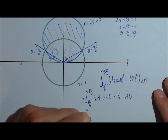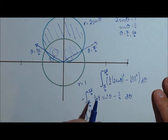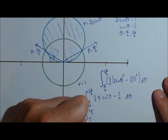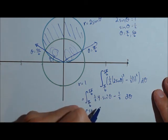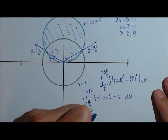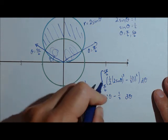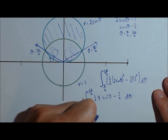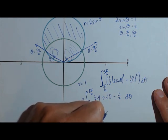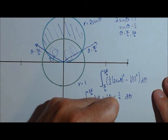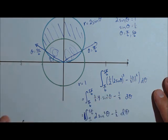So we have pi over 6 to 5 pi over 6. I'm going to go ahead and multiply through. So 2 sine squared theta minus 1 half d theta.